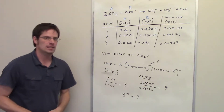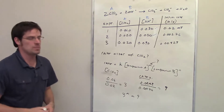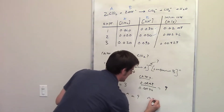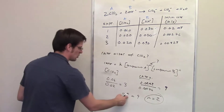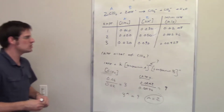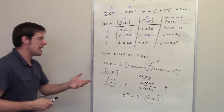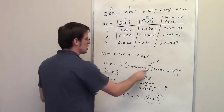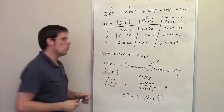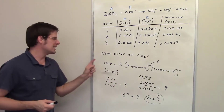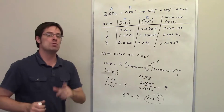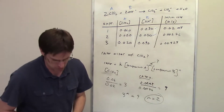Assuming you know how to do basic algebra, you'll discover that M is equal to 2. 3 squared is 9, so M is 2. That is the answer to this question. We're getting closer to determining what the rate law is for this reaction.